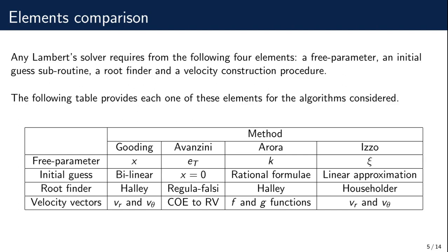Arora makes use of a cosine transformation, introducing a new universal formulation variable named k. The variable q proposed by Izzo also belongs to the universal formulation and is related to a logarithmic transformation. Regarding numerical methods, three of the four methods make use of a high-order convergence method — Halley's method. The radial and tangential velocity construction approach is used by two of the methods. For Avanzini's algorithm, it originally returned the classical orbital element set; however, we applied a conversion between classical orbital elements and position and velocity vectors to standardize outputs.